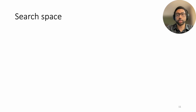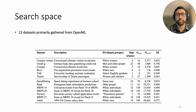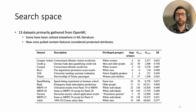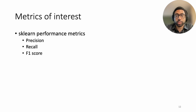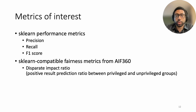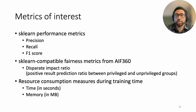To evaluate the performance of different configurations, we utilize 13 different datasets primarily gathered from OpenML. Some, like Compas, CreditG, and Adult, have been used elsewhere in machine learning literature, but we also explore new datasets such as speed dating and nursery, based on the inclusion of features that can be considered protective attributes. For each dataset, we found the ranked feature importance of protective attributes based on an XGBoost model fit to it. For each configuration, we calculated metrics of interest pertaining to predictive performance, fairness, and resource consumption. For predictive performance, we used metrics from scikit-learn such as precision, recall, and F1 score. For fairness, we used the disparate impact ratio metric from AIF360, the positive result prediction ratio between privileged and unprivileged groups. Lastly, we measured time and memory used during training to track resource consumption.